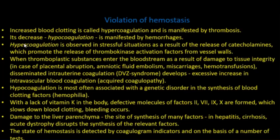Both hypercoagulation and hypocoagulation may be present. Damage to liver parenchyma affects hemostasis. The state of hemostasis is detected by coagulogram indicators and on the basis of tests. Hemorrhagic syndromes are pathological conditions characterized by a defect in the vessel walls, hypocoagulation of blood plasma proteins, causing repeated bleeding and hemorrhages.